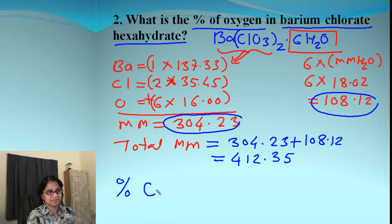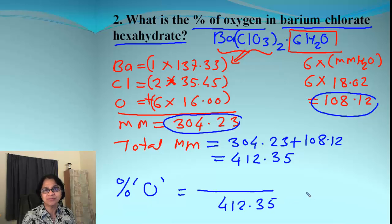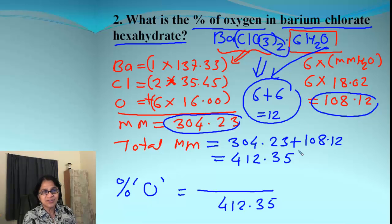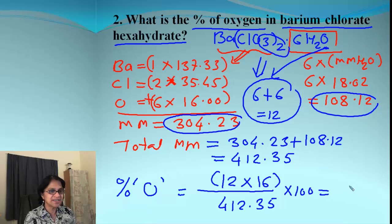Now we need to find out percent of oxygen. And that will be total mass of oxygen divided by the molar mass. The molar mass is 412.35. Now how many total atoms of oxygen we have? Now we got atoms from here. These are 3 times 2. So we got 6 atoms from here. And we also got atoms of oxygen from water. And those are 6 more atoms. So we end up having 12 atoms of oxygen. So the total mass of oxygen will be 12 atoms times the atomic mass of each oxygen atom which will be 16. So that's what we got and times 100. And when we solve that you should get the answer as 46.56%.